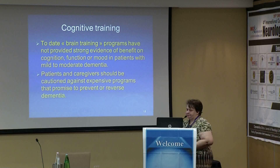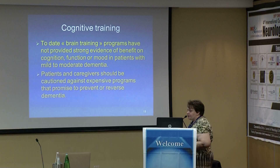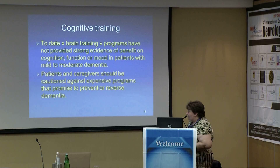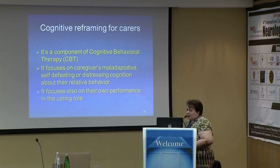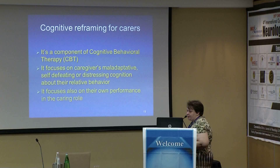Thirdly, cognitive training. To date, brain training programs have not provided strong evidence of benefit on cognitive function or mood in patients with mild to moderate dementia. Patients and caregivers should be cautioned against expensive programs that promise to prevent or reverse dementia. Finally, cognitive reframing for carers is a component of cognitive behavioral therapy, CBT. It focuses on caregivers' maladaptive, self-defeating, or distressing cognitions about their relative's behavior, and also on their own performance in the caring role.